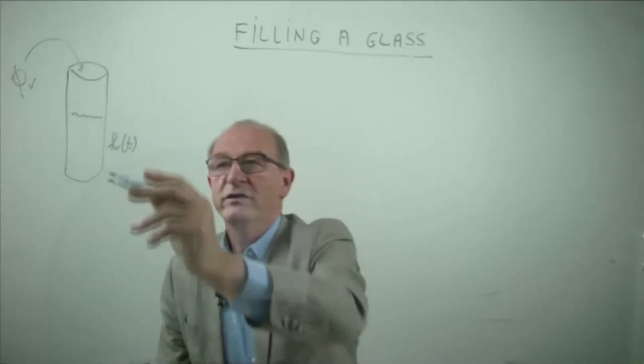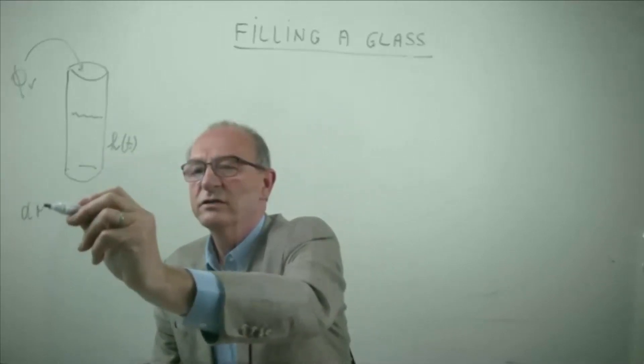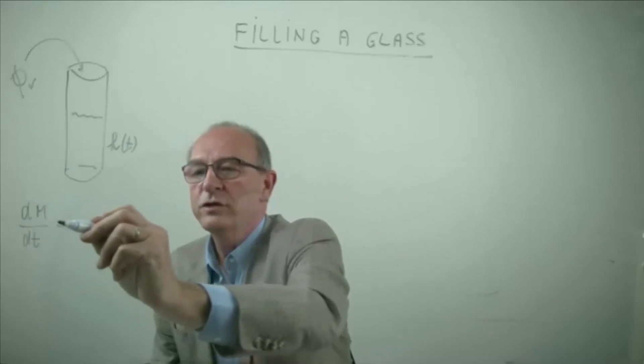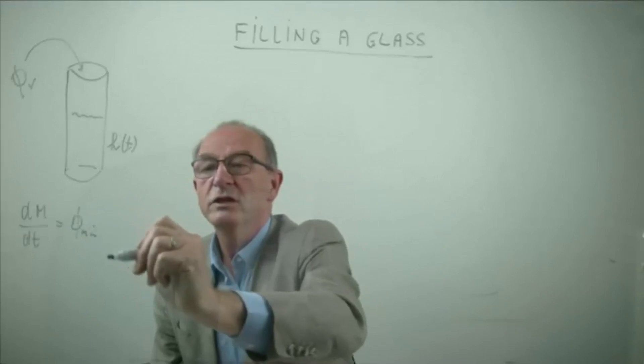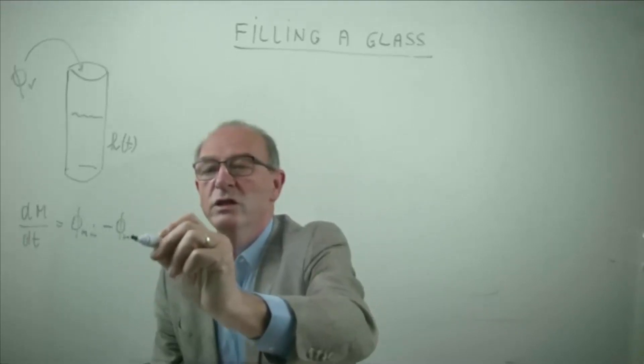Let's write down the mass balance of the glass. The change of mass in the glass of water as a function of time is equal to the amount of mass which enters the glass minus the amount of liquid which leaves the glass.